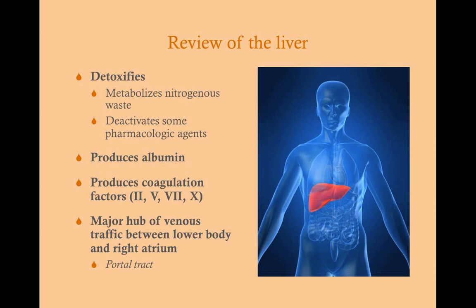So what does the liver do? First, it detoxifies — it metabolizes nitrogenous wastes, generally from proteins, and also deactivates some pharmacologic agents. The liver also produces albumin, which is the most abundant protein in the serum and is very important for maintaining oncotic pressure, which plays an important role in keeping off edema. It produces coagulation factors 2, 5, 7, and 10. And it's a major hub of venous traffic between the lower body and the right atrium. Most venous blood has to go through the liver to get back into the right atrium and into the lungs. We call this the portal tract, and this will be important when we talk about portal hypertension.